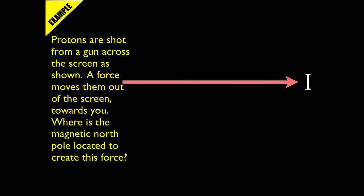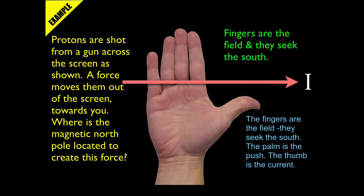Okay, you're back. Let's see. If the current is going from left to right across the screen, my thumb shows the direction of the current traveling from left to right across the screen.